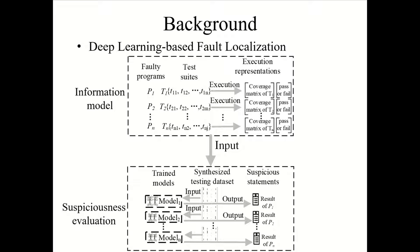With the rapid development of deep learning, researchers have proposed deep-learning-based fault localization. It tries to use neural networks to learn a fault localization model reflecting the relationship between the behavior of a statement and the program failures. This figure shows the process of deep-learning-based fault localization. It collects and abstracts the information of the test suite on each program as a matrix representing whether a statement is covered or not covered, with passing or failing test results.